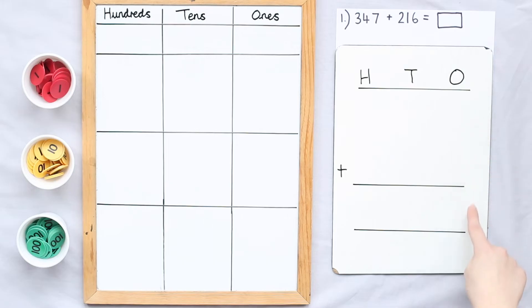I've set out my column addition vertically with my hundreds column, my tens column, my ones column. I have my operation symbol at the side and my equals sign.